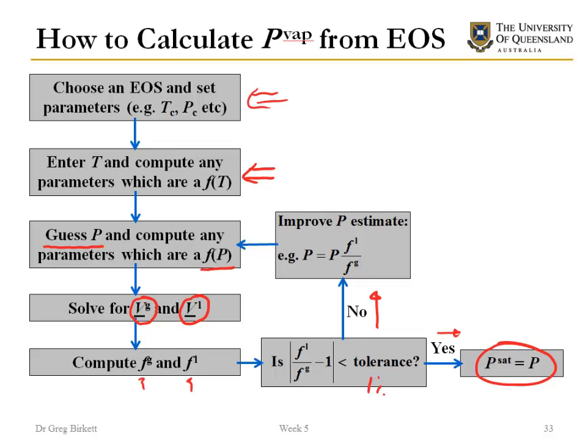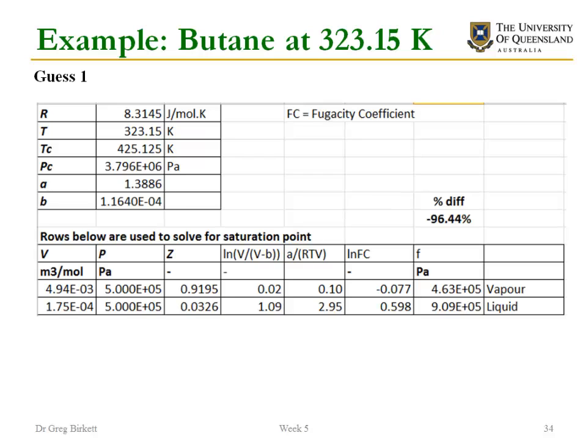So to demonstrate this I'm going to look at an example of butane at 50 degrees Celsius and also using the van der Waals equation of state, because we've already done the fugacity calculations with that. So butane at 50 degrees Celsius which is 323.15 Kelvin. I've chosen my equation of state, there's no temperature dependent parameters in the van der Waals equation of state. Now I'm going to guess my pressure, so my initial guess for pressure is going to be half a mega Pascal, so 500,000 Pascals.